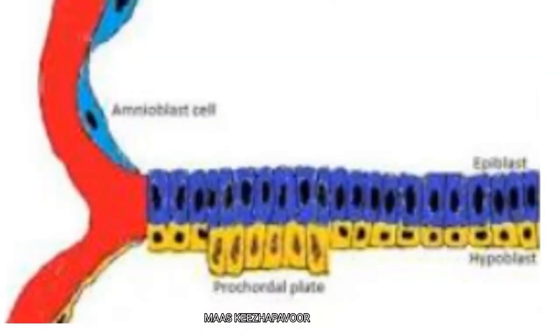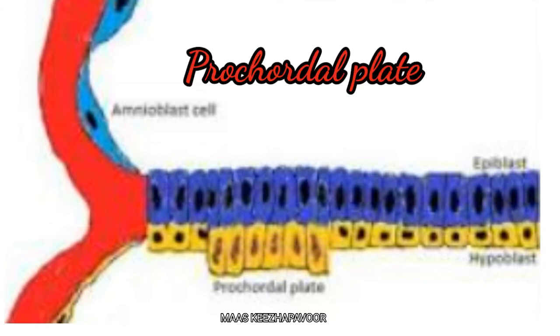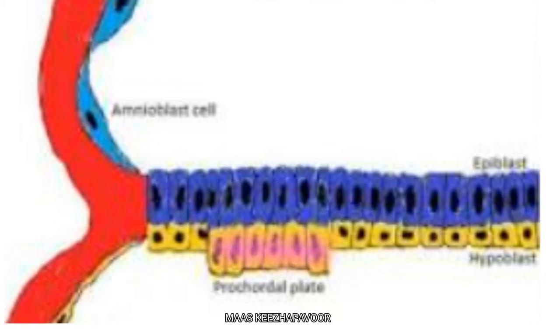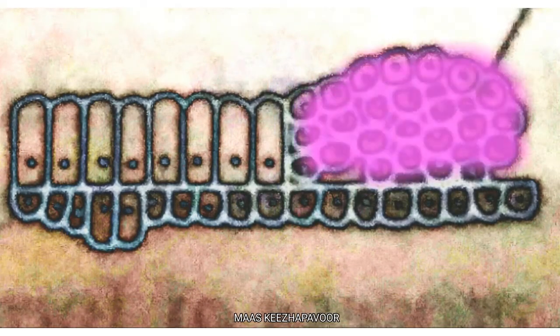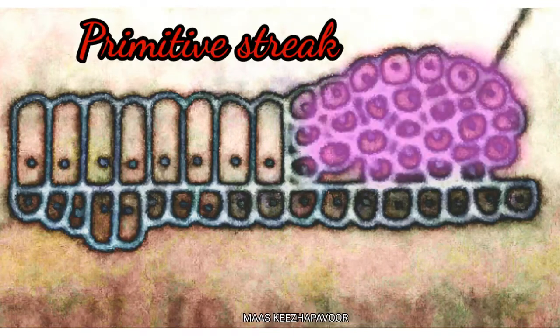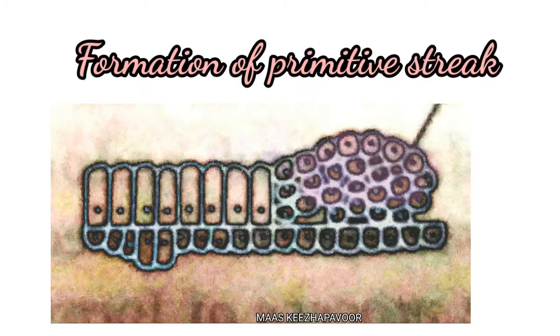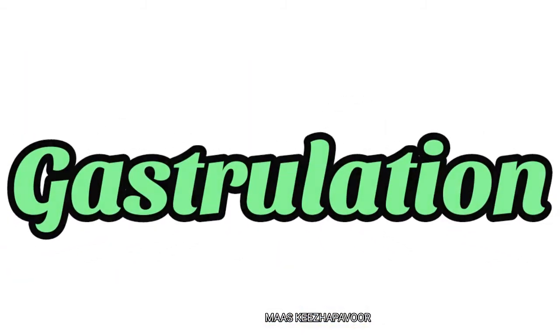At one end of the embryo, the cuboidal cells of the endoderm are transformed into columnar cells. This area is the prechordal plate, which determines the head end of the embryo. In the opposite pole, the columnar cells of ectoderm transform into cuboidal or polyhedral cells, forming the primitive streak. This primitive streak determines the caudal end of the growing embryo. The process of formation of the primitive streak and the third germ layer is called gastrulation.